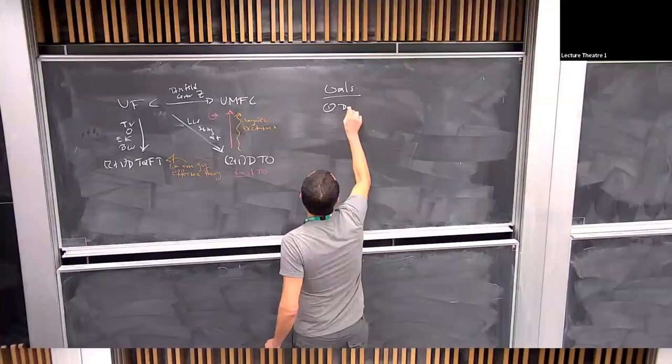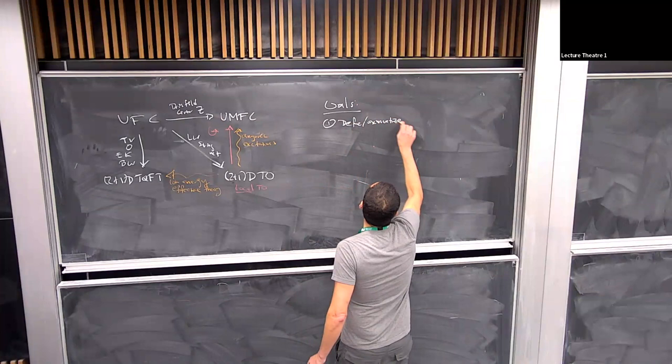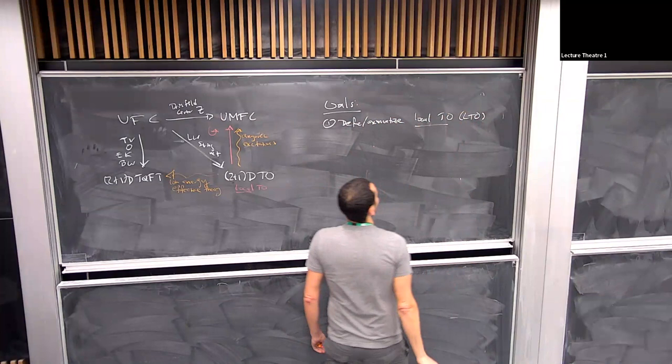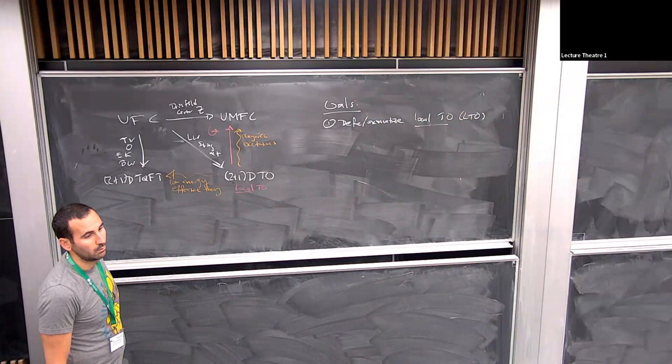Our goals today: one, define and axiomatize local topological order (LTO). This is going to build on the TQO axioms of Bravyi, Hastings, and Michalakis.